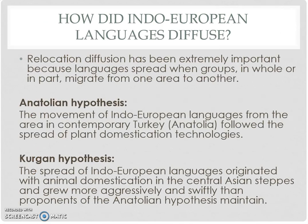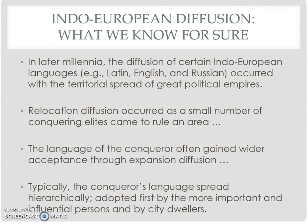So, mobility — we can see language moving around throughout the world. We have relocation diffusion. The Anatolian hypothesis describes the movement of Indo-European languages from the area around Turkey, thought to be one of the original formations of civilization. The Kurgan hypothesis suggests the spread of Indo-European originated with animal domestication in the Central Asian steppes. Both of those are likely true to some extent.